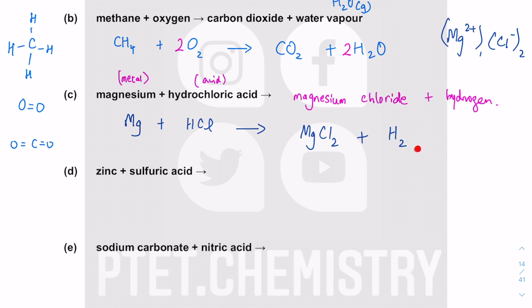Hydrogen exists as H2 gas at room temperature and pressure. To balance Mg + HCl → MgCl2 + H2: you get 2 Cl from MgCl2 but only 1 Cl per HCl, so put 2 in front of HCl. 2 HCl gives 2×1 = 2 hydrogen and 2×1 = 2 chlorine. The 2 chlorine balances, magnesium balances, and H2 on the right balances the 2 hydrogen on the left. The equation is balanced.